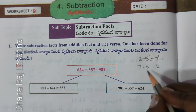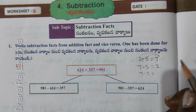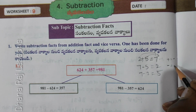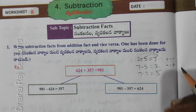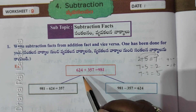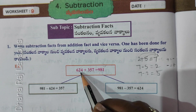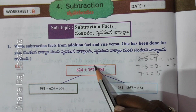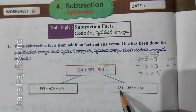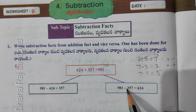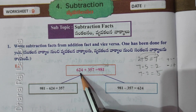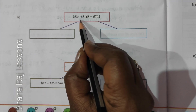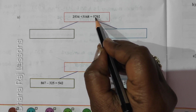From the addition sentence, minus equal to 981. So 981 minus 357 equal to 624. This value: 624 plus 357 equal to 981; minus 624 gives the subtraction fact.